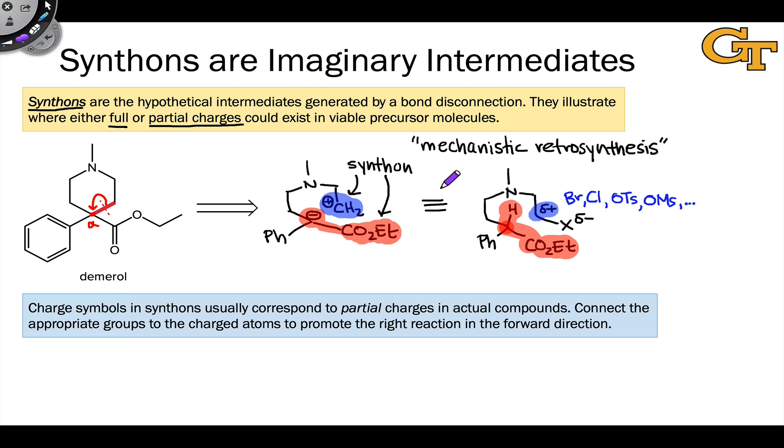So the synthon was a really useful conceptual tool for thinking about how to work backwards in a retrosynthetic direction. Even though it's not something that will actually be generated in the course of the synthesis, for a lot of functional purposes we can think of the synthon as equivalent to the actual structure we use, in that the starting material plus a reagent, like a base, is functionally equivalent to the synthon. In the case of the Demerol synthesis, we could apply this exact same idea to the other carbon-carbon bond associated with the cyclic amine, and that's how we got back to the dihalide structure.